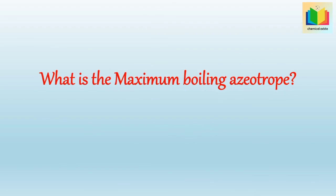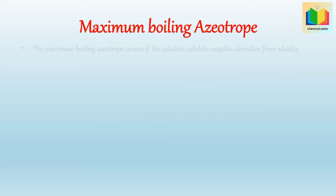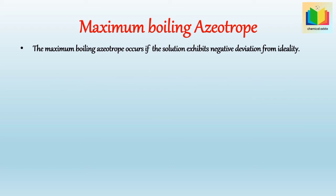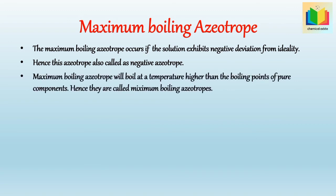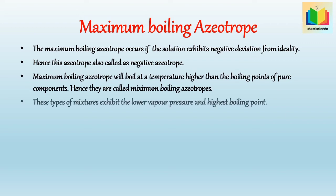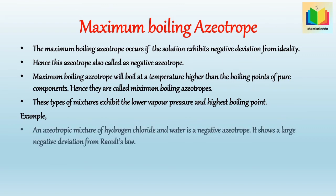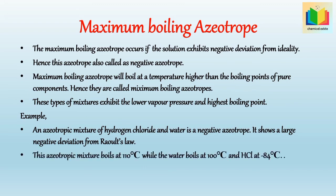What is the maximum boiling azeotrope? The maximum boiling azeotrope occurs if the solution exhibits negative deviation from ideality; hence it is also called a negative azeotrope. It boils at a temperature higher than the boiling points of pure components. These mixtures exhibit lower vapor pressure and the highest boiling point. Example: an azeotropic mixture of hydrogen chloride and water is a negative azeotrope showing a large negative deviation from Raoult's law. This mixture boils at 110°C, while water boils at 100°C and HCl boils at −84°C.